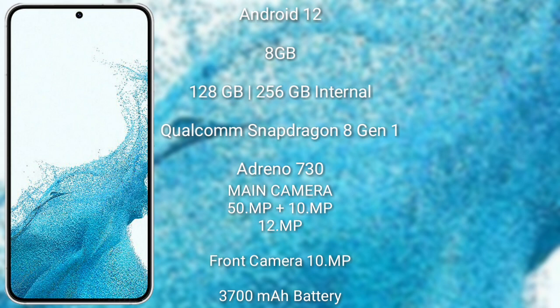The Samsung Galaxy S22 comes with a 6.1-inch Dynamic AMOLED display and runs on Android 12. It comes with 8GB RAM and 128GB or 256GB internal storage, and is powered by a Qualcomm Snapdragon 8 Gen 1 processor with Adreno 730 GPU.